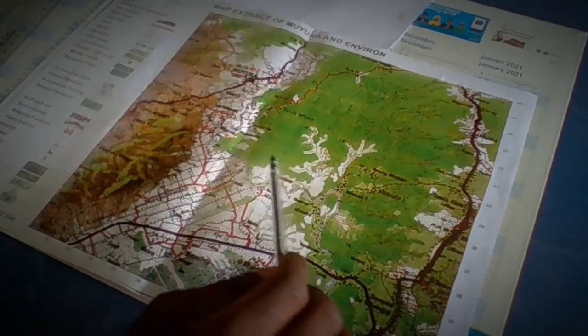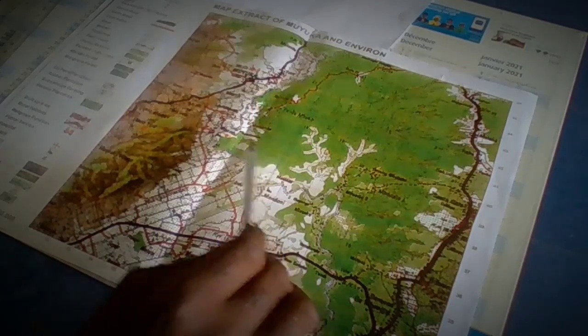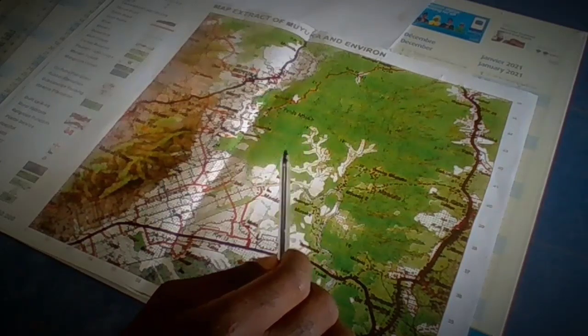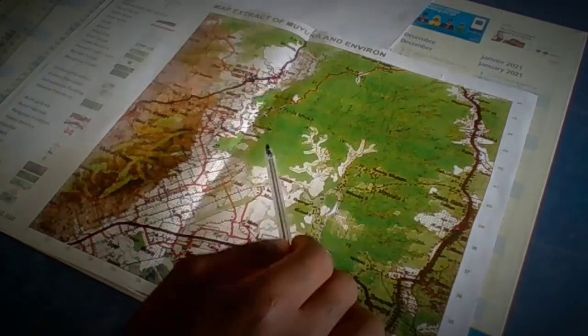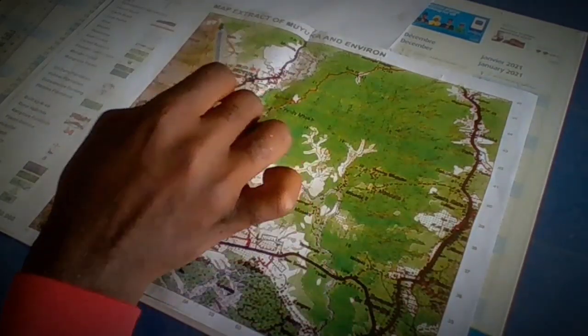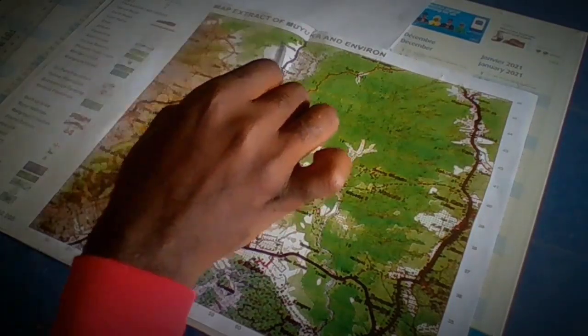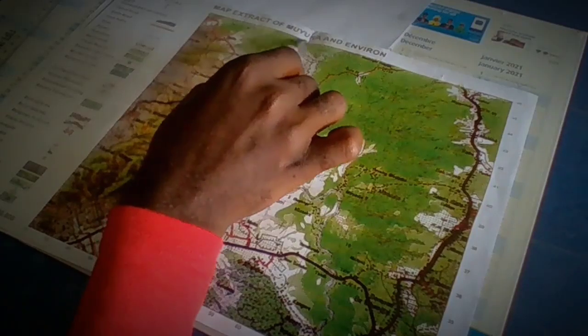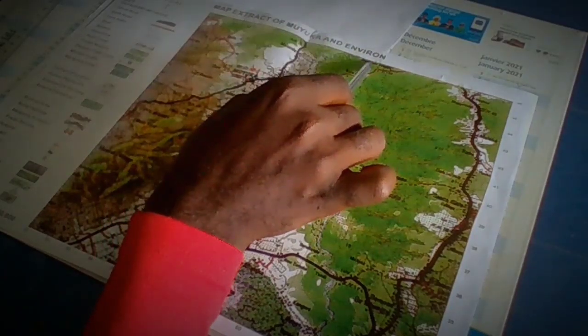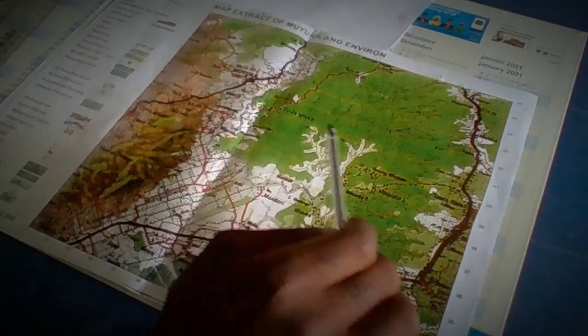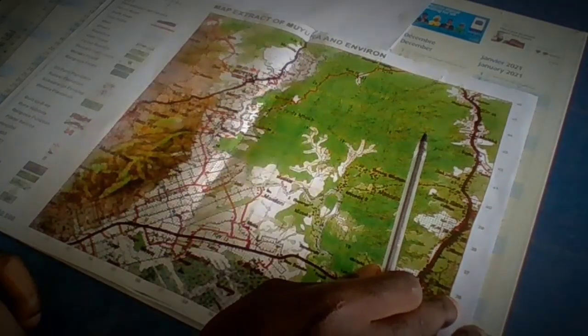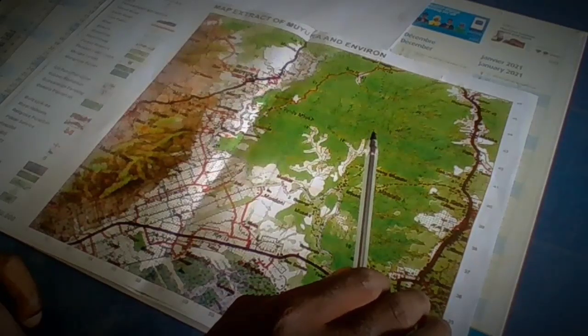After which, we are also going to give a title to the drawn diagram. Since we have been asked to sketch a map showing the relief of this region, we are simply going to give a title as the sketch map extract of the relief of Mojoka and environs, since we are dealing here with the map of Mojoka in Cameroon.